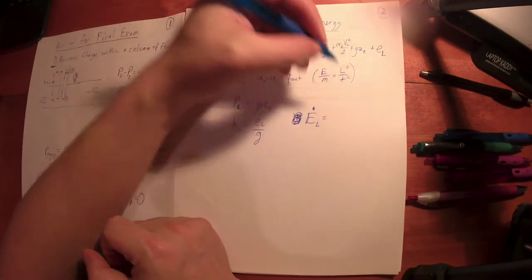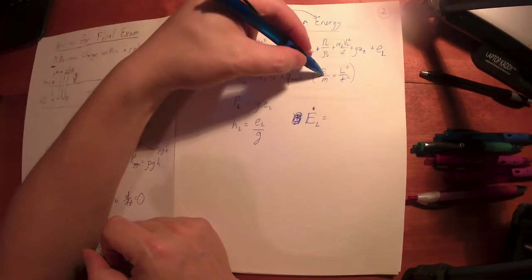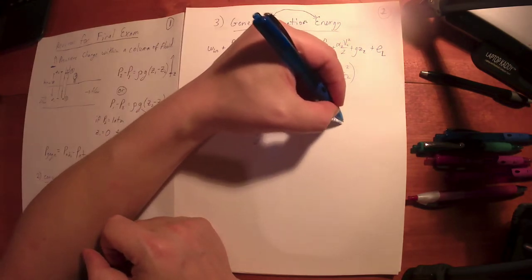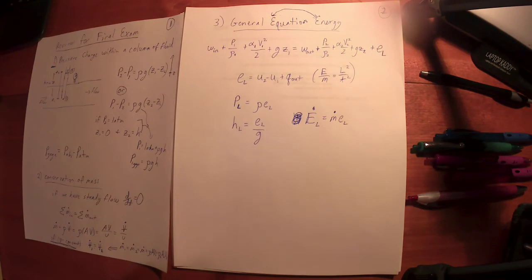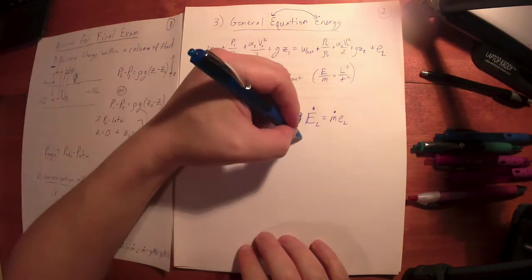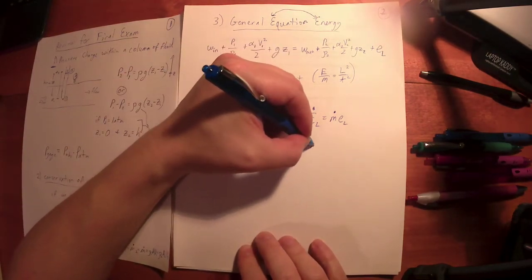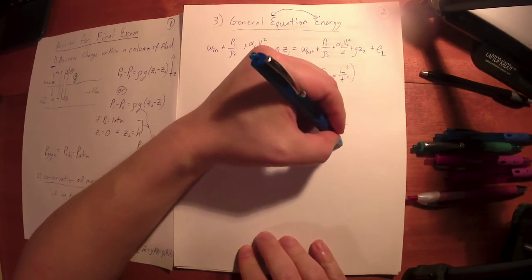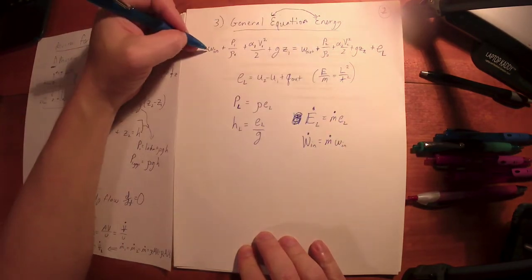And then let's say that big E dot loss, the rate of energy loss, well that's if this is energy per unit mass and I multiplied by mass per unit time, I multiply something that's energy per mass multiplied by mass per time, I get energy per time. Think about the power input to a pump. The power input to a pump would be the mass flow rate times this little W in that you could find from this expression.